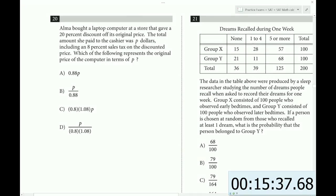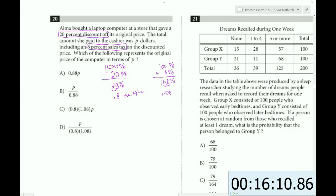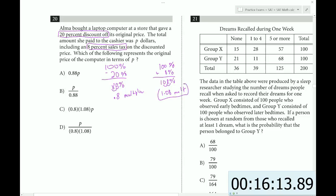Alma bought a laptop computer at a store that gave a 20% discount. So whenever we see 20% off, we should think multipliers. So to get 20% off, we start with 100% and we subtract 20%. That gives 80%. We move the decimal twice to the left and that gives 0.8 as our multiplier. The total amount she paid to the cashier was P dollars, including an 8% sales tax. So that is an 8% increase. So it's quite the opposite. Instead of subtracting, we would add 8%. We get 108%. We move the decimal twice to the left. We get 1.08 as our second multiplier. This is for the tax. This is for the discount.